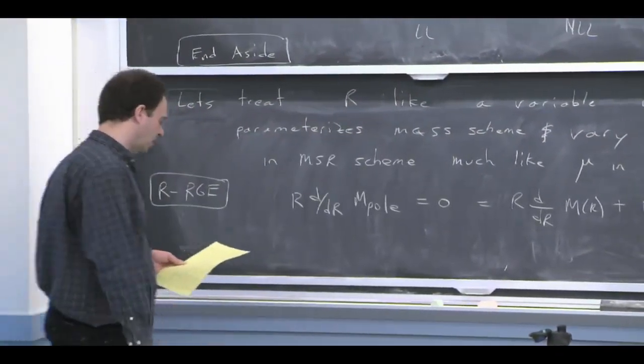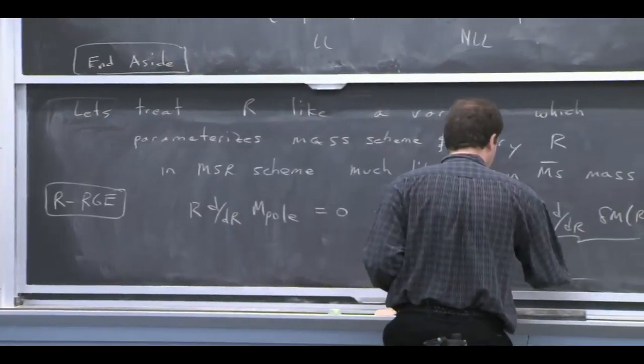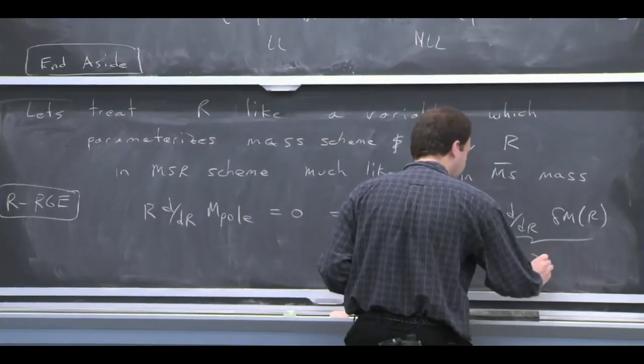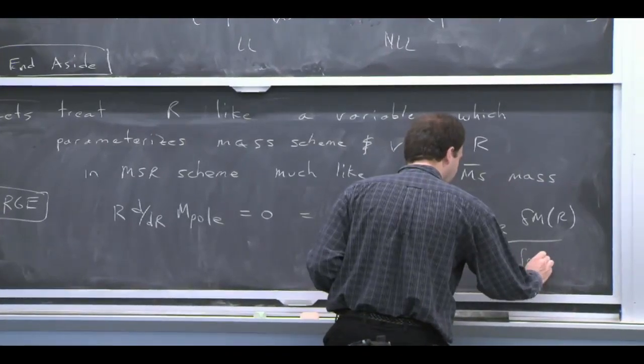This delta m was a function of R, and we can define this as R to get the dimensions right, times some kind of anomalous dimension that's just a function of alpha.